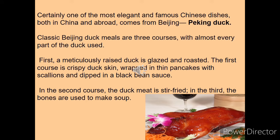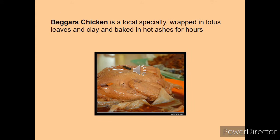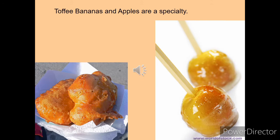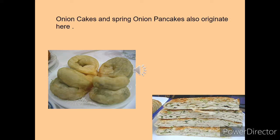Sometimes pickled radish is also added and other sauces like hoisin can be used. Another famous dish is beggar chicken, which is wrapped in lotus leaf and baked in clay in hot ashes for hours. They also have steaming Mongolian hot pots and barbecues that you can find everywhere in northern China. Famous desserts of this region include toffee bananas and apples. Onion cakes and spring onion pancakes are also famous from this region, as both originated here.